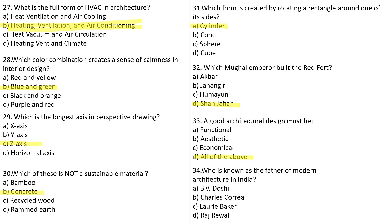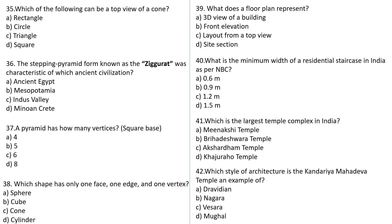Question number 34: Who is known as the father of modern architecture in India? Options: BV Doshi, Charles Correa, Laurie Baker, or Raj Rewal. The correct answer is BV Doshi. Question number 35: Which of the following can be the top view of a cone? Rectangle, Circle, Triangle, or Square? Answer this — it is a very easy question.